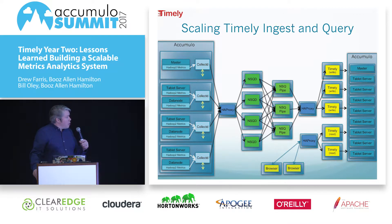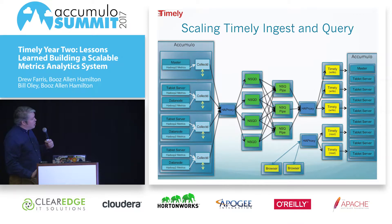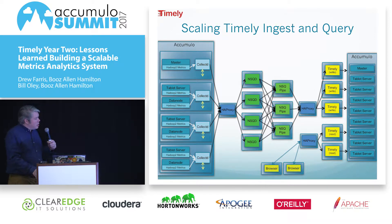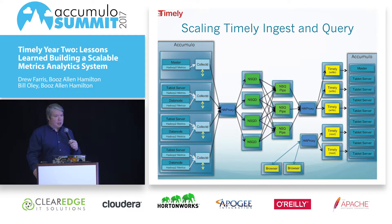A couple of things we experimented with: the read and write partitioning for the Timely instances isn't in production today, but we anticipate doing it pretty soon. Right now all of the HAProxy instances are actually the same physical box and process, and when we identify that as a bottleneck, we can break that out across multiple boxes pretty easily.